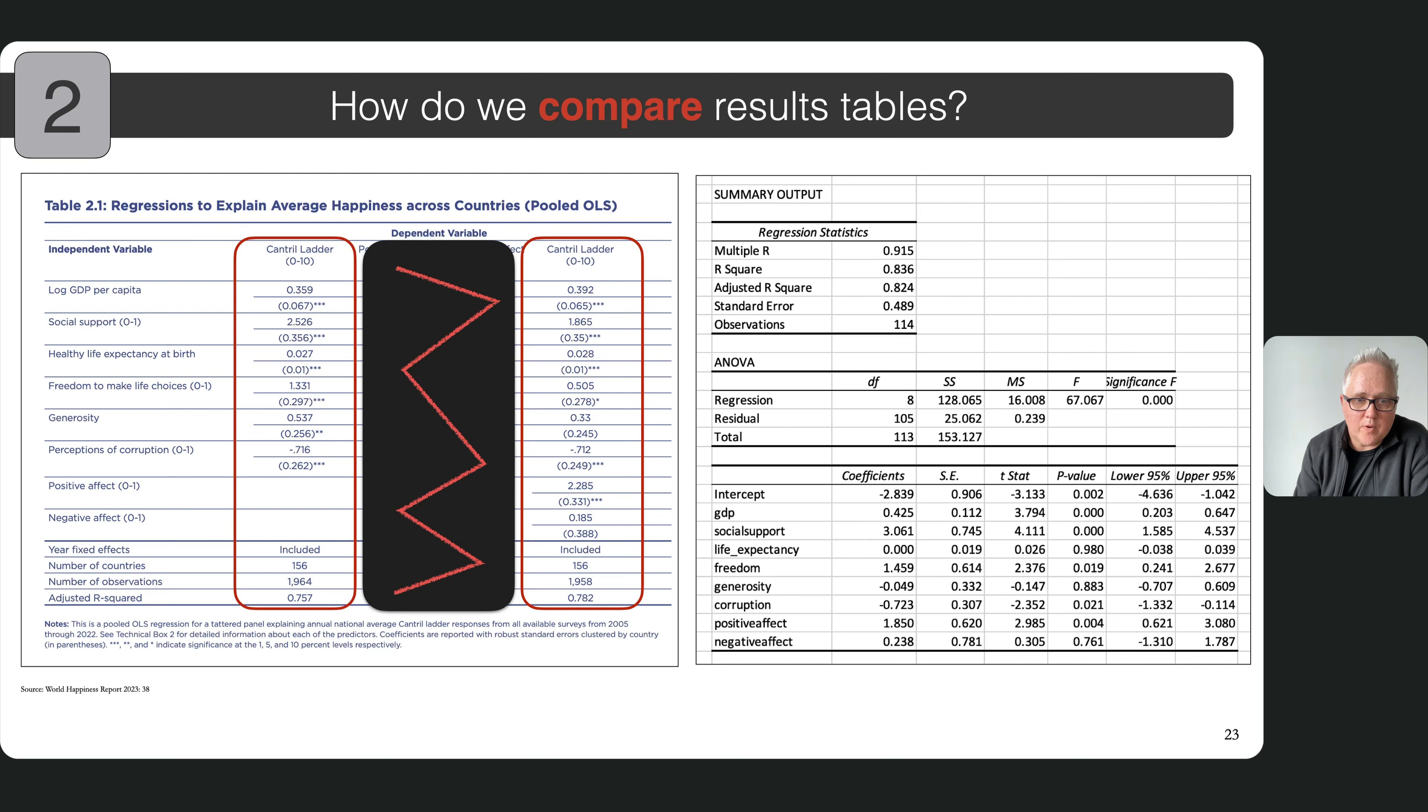Same with the adjusted R squared down at the bottom. You see the amount of variation in the dependent variable explained goes up a little bit from 0.757 to 0.782. However, most of the results seem to be pretty similar for the variables towards the top of the table. One thing to note between the data that we're using in class and the results that are presented here is that in the report they pool data on happiness from across a number of different years. And so that's why you have the number of observations is almost 2000 and 156 countries included in all of their models.